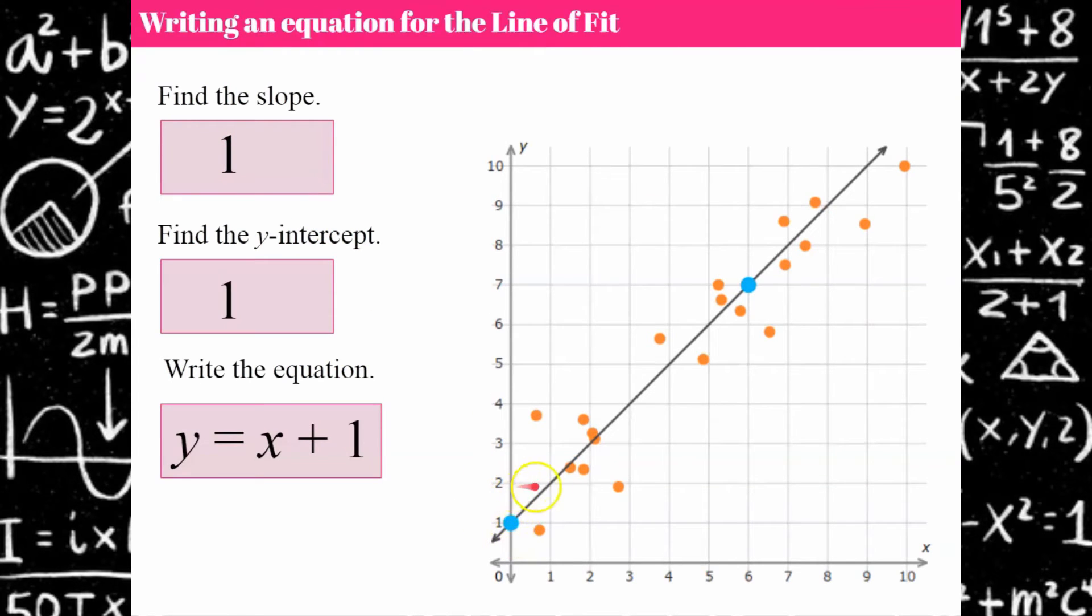You could have done rise over run or you could have used seven minus one which is six all over six minus zero which is six and six over six is one.